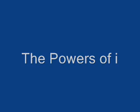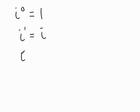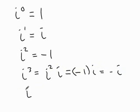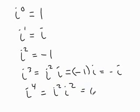It's worth a minute of our time to review the powers of i. i to the 0 power is equal to 1, i to the 1st power is i, i squared is defined to be negative 1, i cubed can be broken up into i squared times i, which is negative 1 times i, which is the opposite of i. i to the 4th can be written as i squared times i squared, which is negative 1 times negative 1, which is 1.